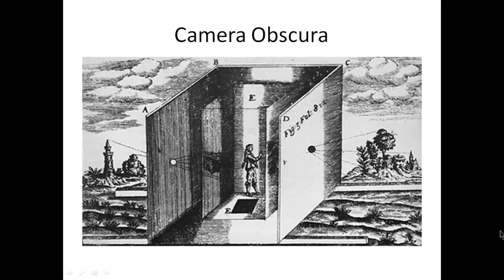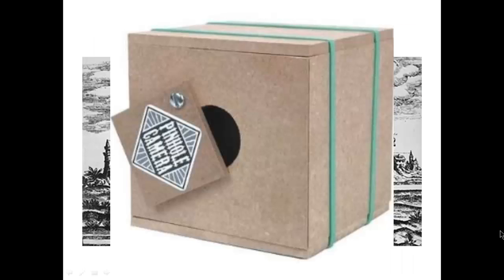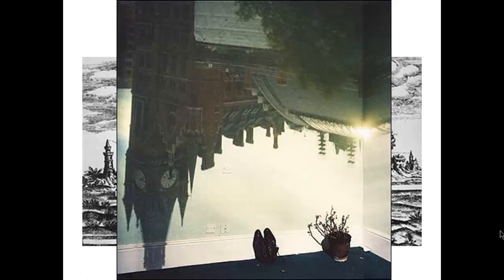The camera obscura does not necessarily have to be a large structure outside. It could be rooms built inside a building, or it can also be a smaller box with a hole bored in the side that allows light in to create a projected image inside. An interesting consequence of this technique is that the projected image is actually upside down. However, it is easy for an artist to outline the image and then turn the canvas right way up so that the painting is not upside down as well.